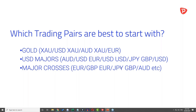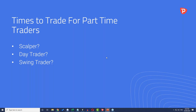Which trading pairs are best to start with? If we want to scalp and day trade, we really want to stick to US dollar majors such as AUD/USD, EUR/USD, USD/JPY, GBP/USD, and gold pairs like XAU/USD. We can also go with major crosses like EUR/GBP and EUR/JPY. What you're looking for is high liquidity trading with a huge amount of volume — that's very important.